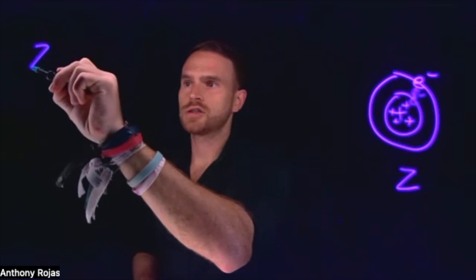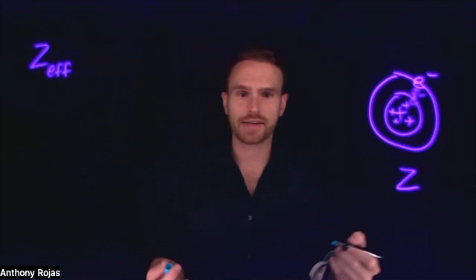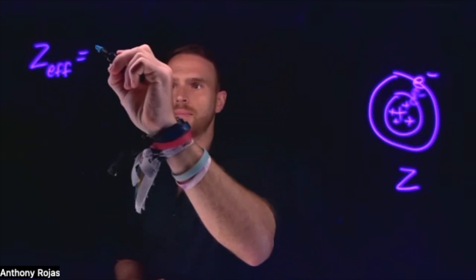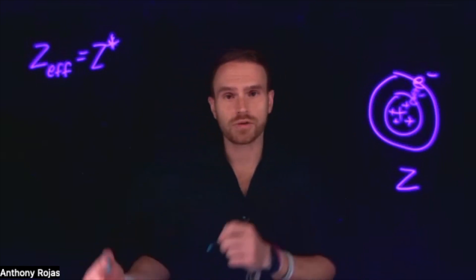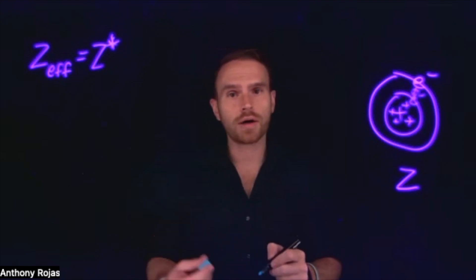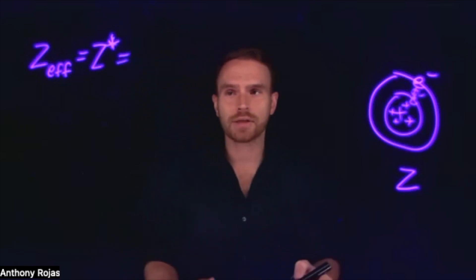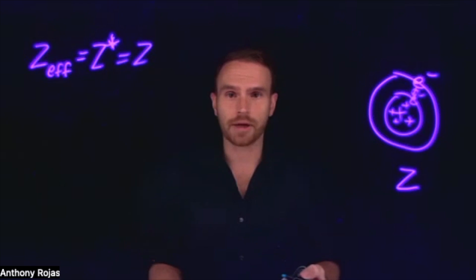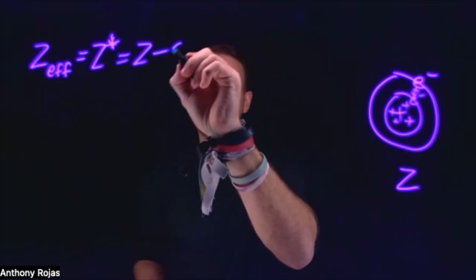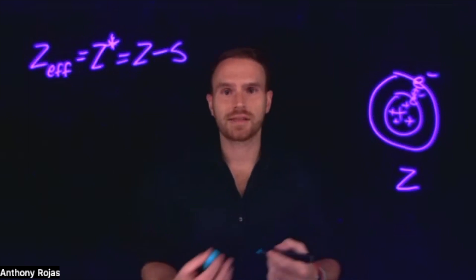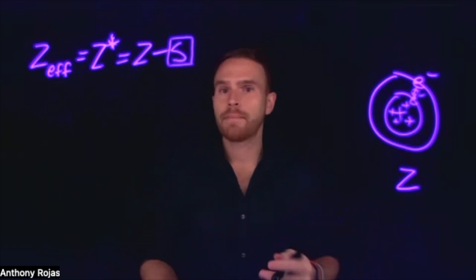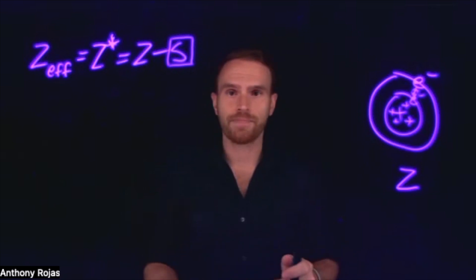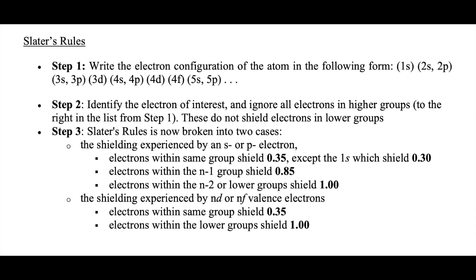The effective nuclear charge is sometimes written as Z_eff to indicate effective nuclear charge, and sometimes also as Z-star. Z-star accounts for the shielding effect from those inner core electrons and allows us to quantify that effective nuclear charge value. To calculate it, it's equal to Z — the atomic number for the element of interest — minus S, where S stands for shielding. This is Slater's Rules. On exams I will always provide you with these rules, so you don't need to memorize them.